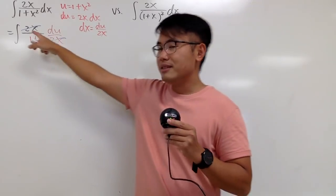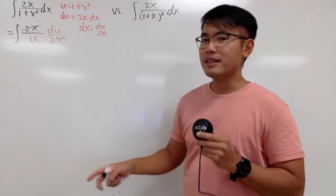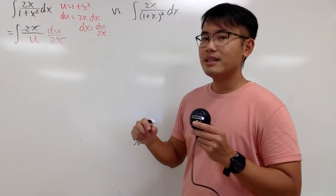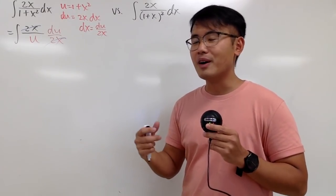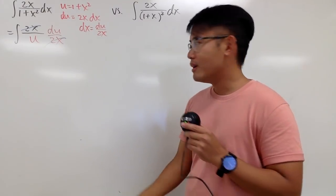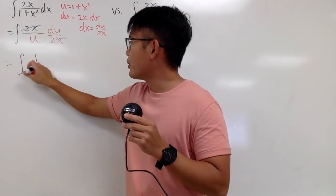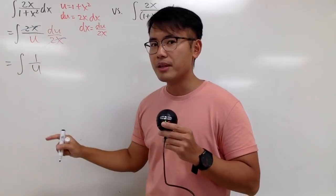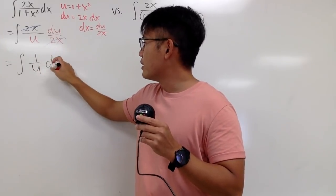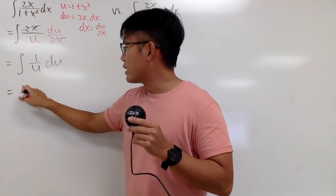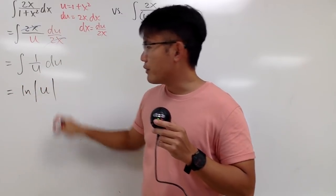Well, they do cancel out nicely. Sometimes if they don't cancel out nicely, when you isolate the dx like this, it's actually much better, because you can figure out what's the leftover. Anyway, this now is just integrating 1 over u. Okay, this u is in the denominator. And then we are in the u world. So integrating this, we get natural log absolute value of u.